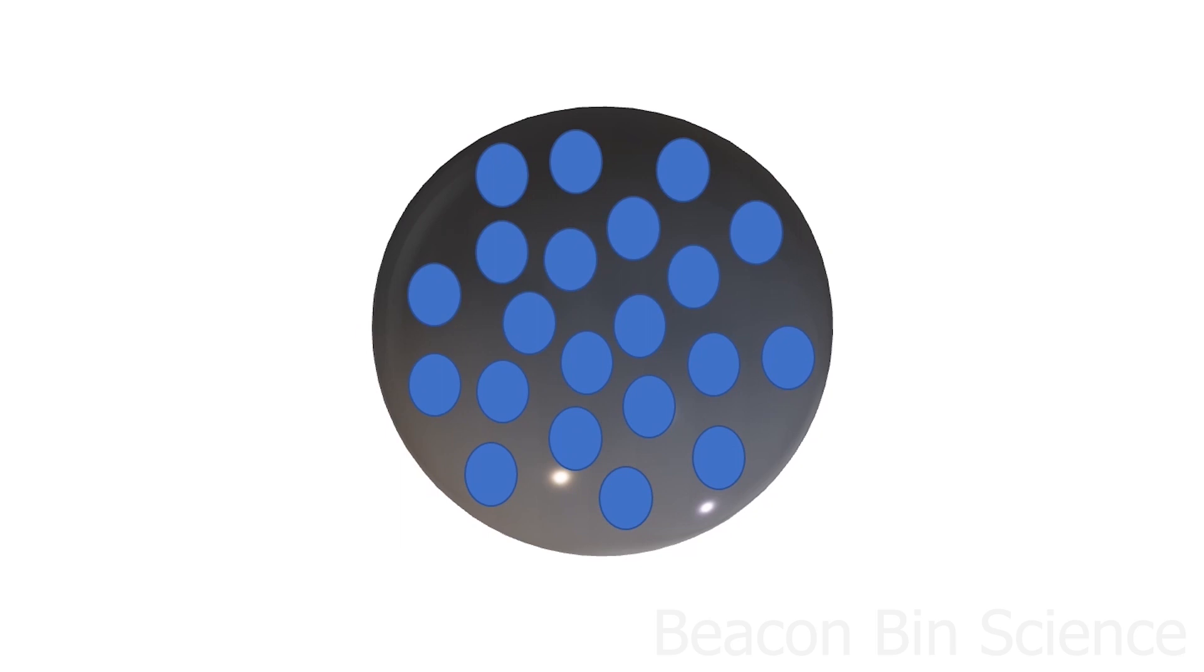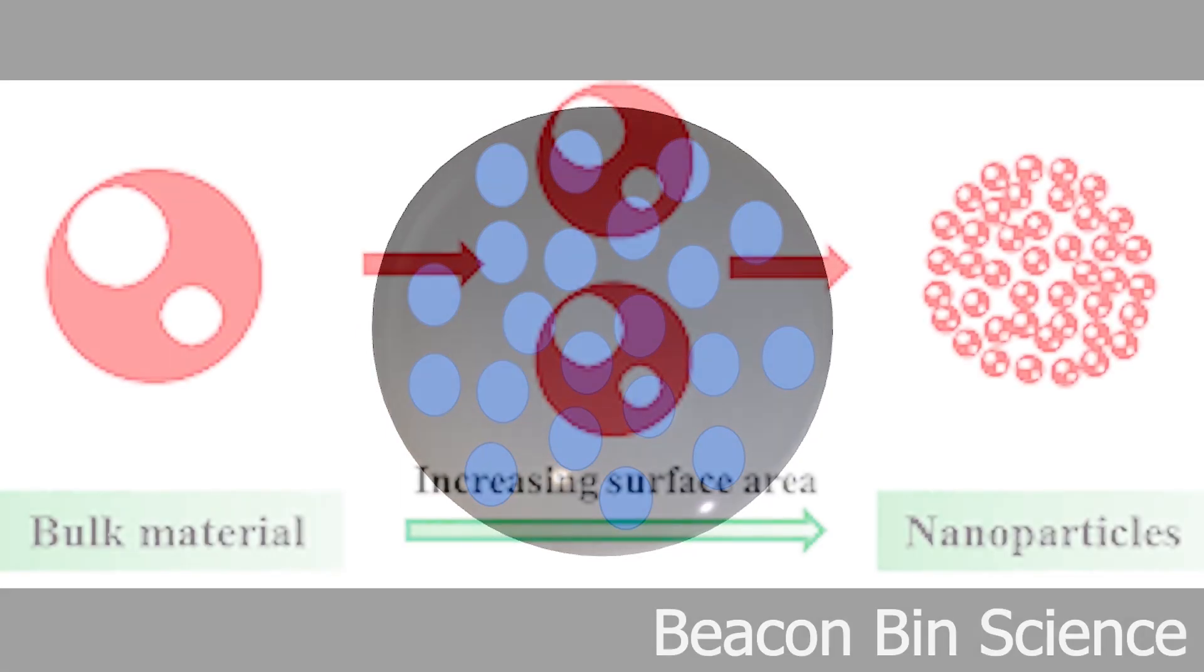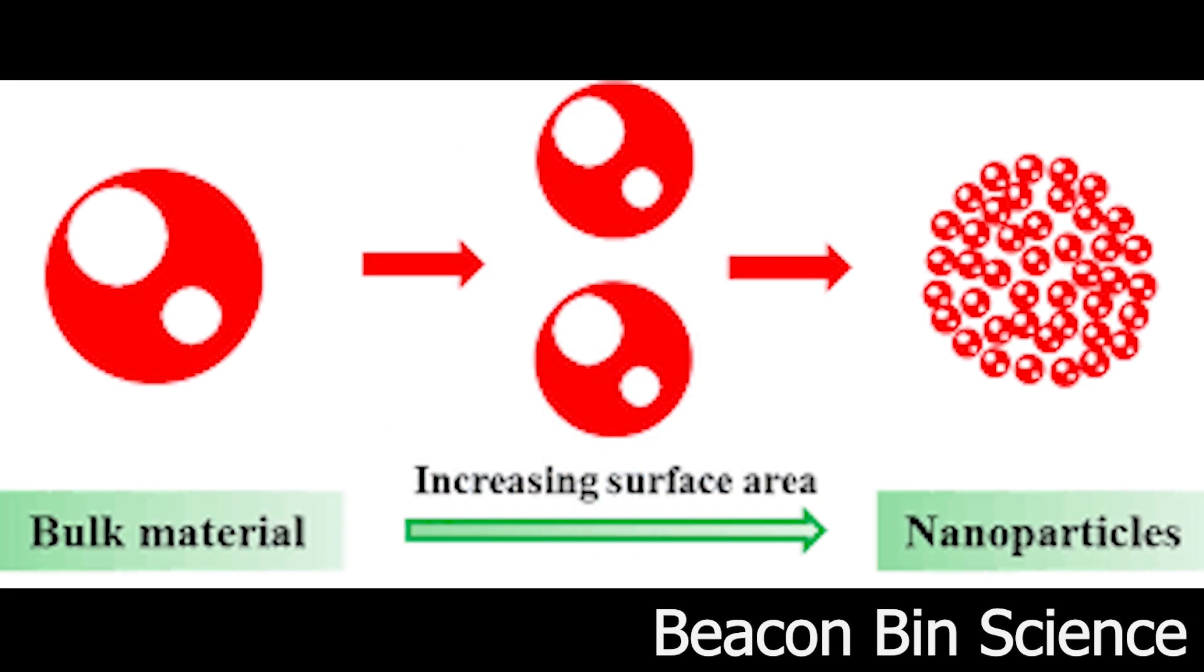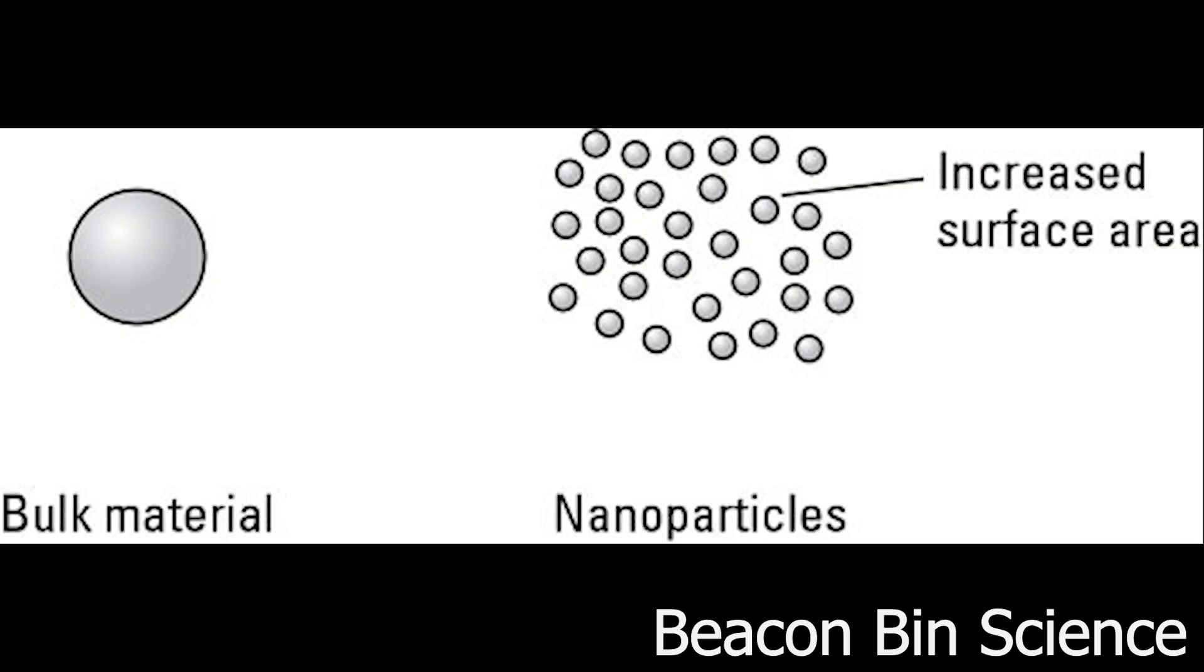Now break the ball to several nano sized particles. Those atoms which were initially interacting themselves are now came at the surface and begin to interact with the wooden lane atoms. These atoms begin to contribute very significantly to the overall properties of the material. That's the reason why surface area increases in nanometer size particles.